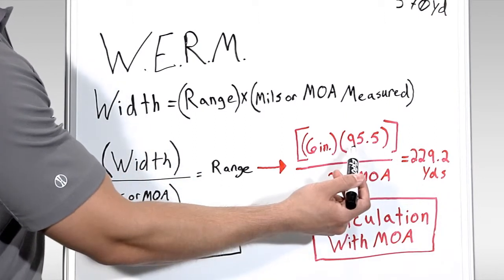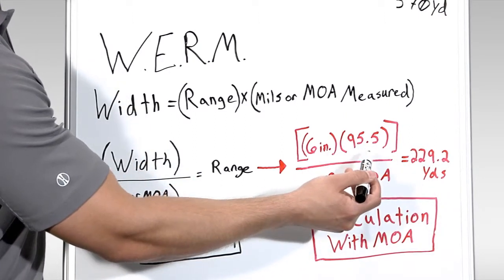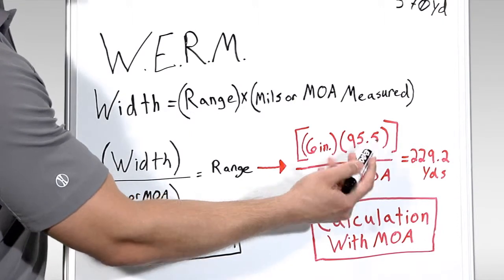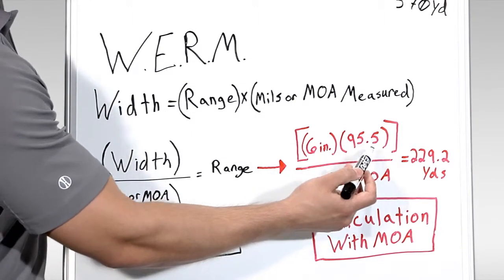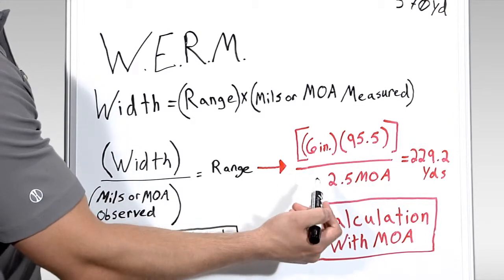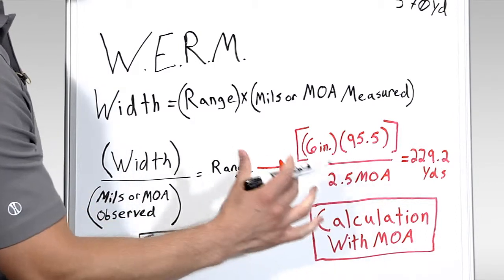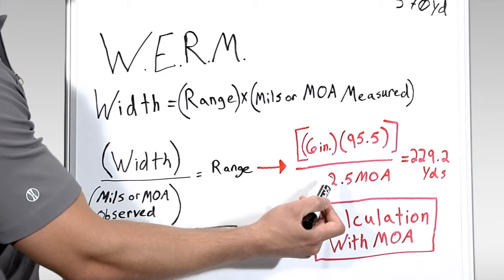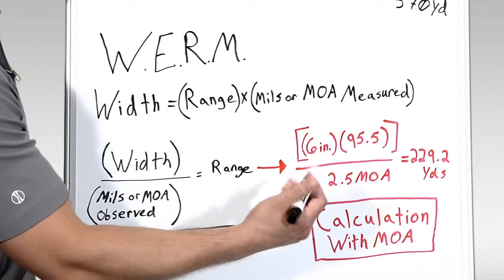Some shooters and observers will use 100 in place of 95.5 for the sake of simplicity, but keep in mind that if you leave this number, you will experience a 5% overestimation in yardage, and this needs to be compensated for down the road, or you will experience an inaccurate reading.